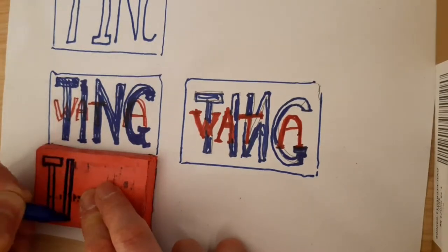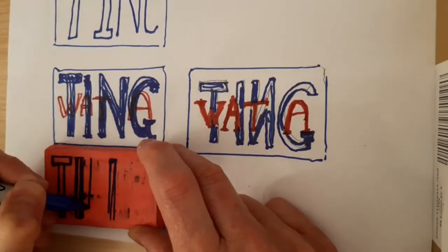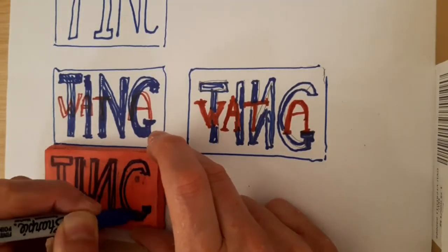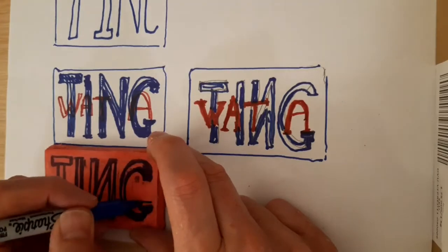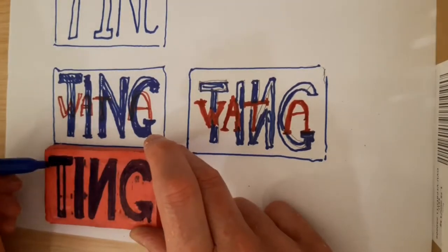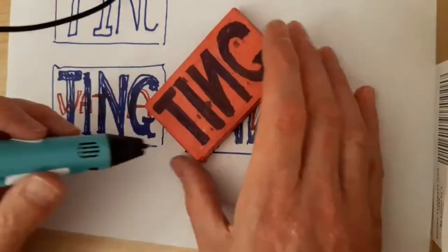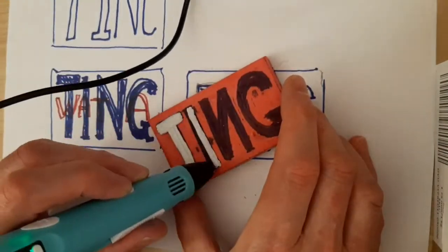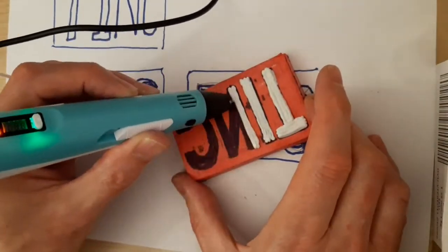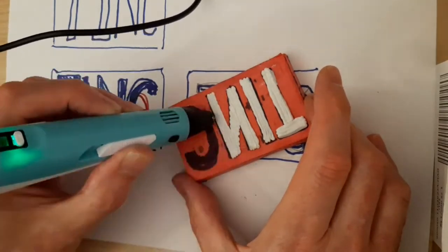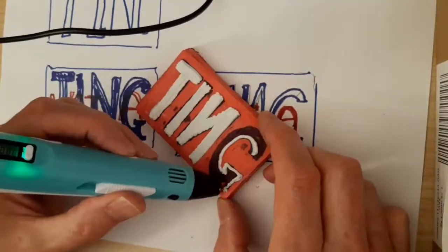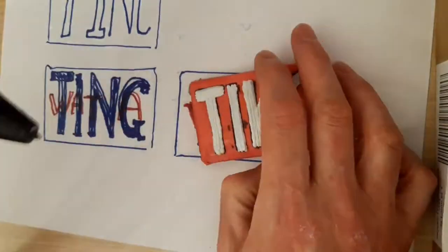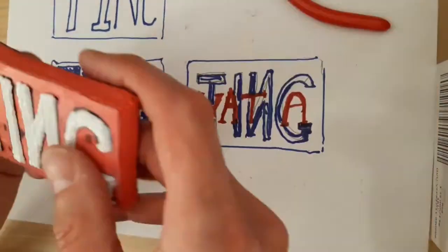Now we're going to just mark out the ting. This is my other 3D pen. This one's actually, it's not USB powered, it's got its own separate power supply in it. Seems to be a lot, it's actually a lot quicker. I've used it extensively, I love this pen. A bit tidying up and we have a ting.